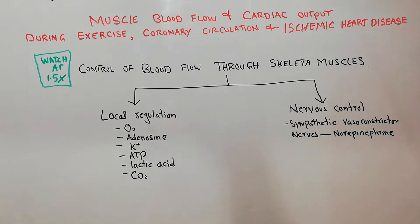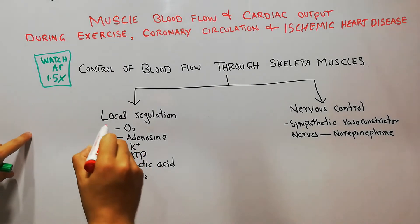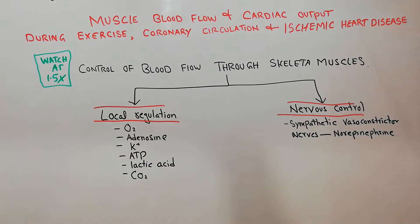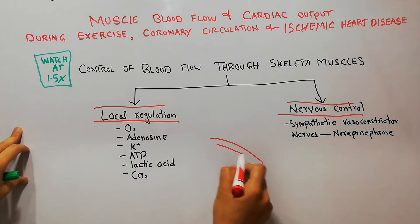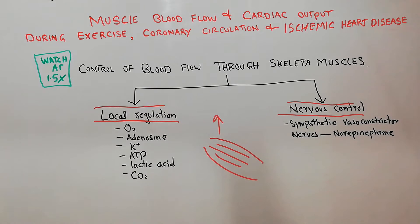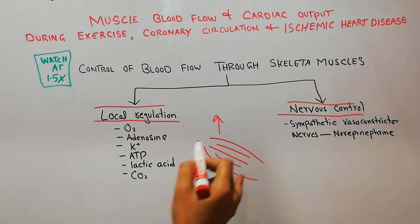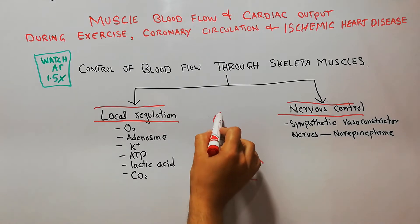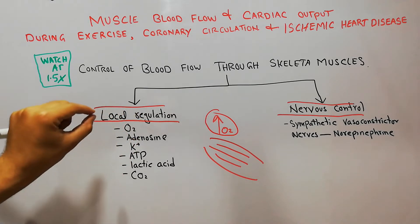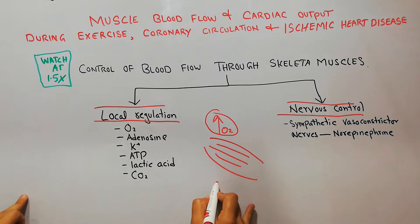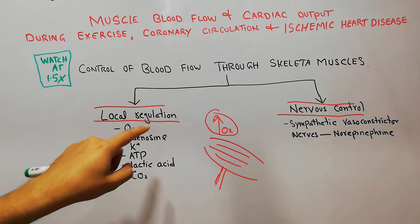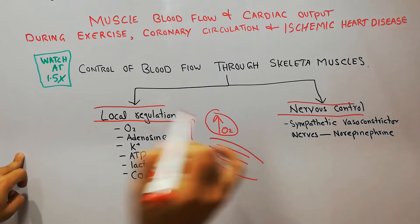The main factors which regulate the blood flow through the skeletal muscles are the local regulatory mechanisms and the nervous system control. Whenever a muscle's demand starts increasing — for example, when a person starts exercise — the demand of muscle cells for oxygen and other nutrients will increase. The most important factor that will increase the blood flow to the muscle is oxygen.